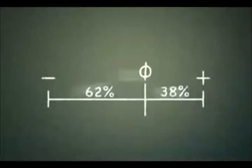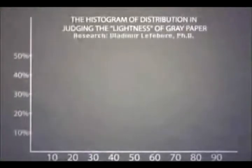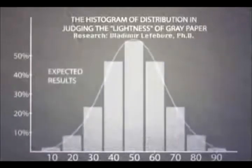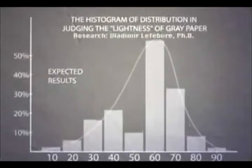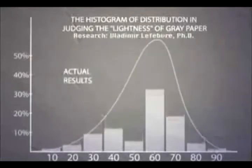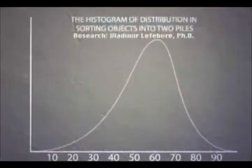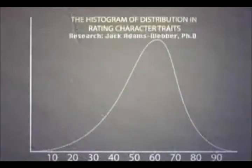Researchers have confirmed his findings in numerous studies. For example, when you ask people to judge how dark a piece of gray paper is, the answers don't produce a bell curve, as you might think. They bulge at the 62% point. If you ask subjects to sort objects into two piles, or rate acquaintances' character traits, or make choices in situations of uncertainty, you get the same result.